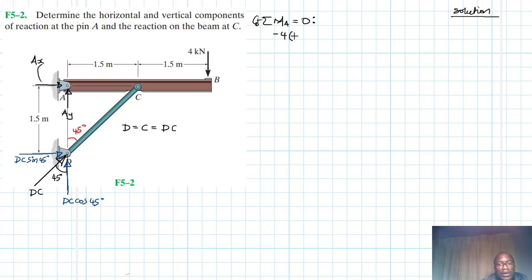So we have a negative moments due to four. So that's four by three. And then we have plus DC sin 45 times the lever arm, which is 1.5 equal to zero. DC, therefore, is just going to be equal to, we have minus four by three and divided by 1.5 sin 45. So we have 11.3137 kilo newtons.